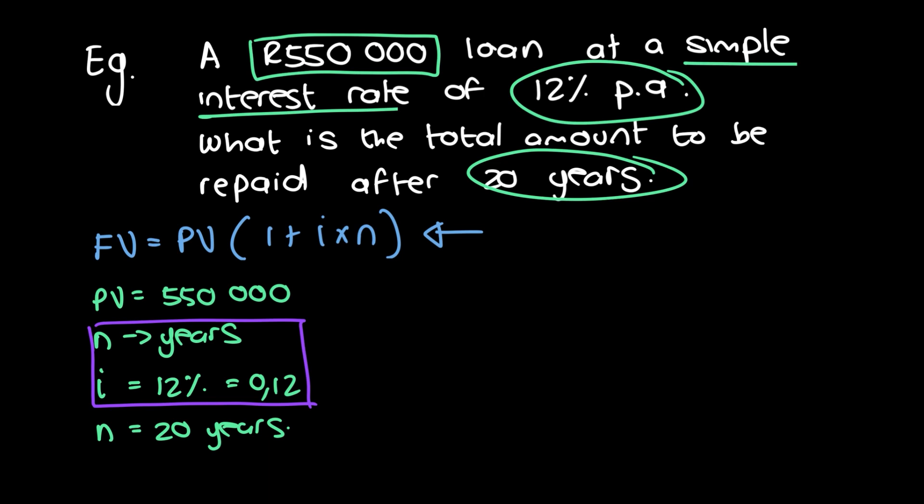So if you put this into the formula, we're going to have the future value is equal to 550,000 multiplied by 1 plus 0.12 times by 20. And that is going to give us 1,870,000. So it's quite a large loan amount that you're going to have to pay back at the end of 20 years, because we're assuming that there's no payments, repayments happening in between. So at the very end, you have 1,870,000 Rand to pay back for this loan.